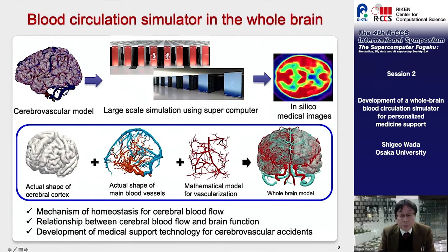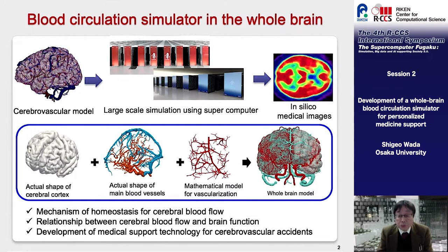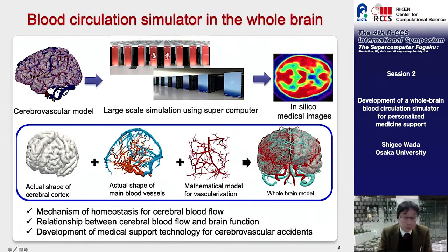We have been developing a whole brain circulation simulator using a supercomputer. This research was started as a post-key project and is taken over by a promoting research project using GAT. In this project, we aim to simulate the blood flow dynamics at a whole brain scale to understand the mechanism of homeostasis for cerebral blood flow, the relationship between blood flow and brain functions, and to develop a medical support technique for cerebrovascular disorder.